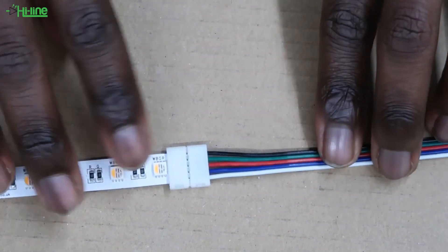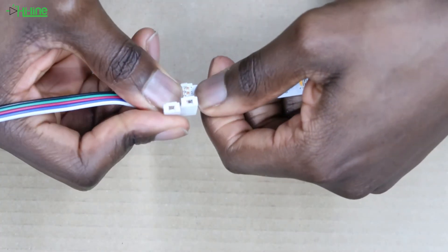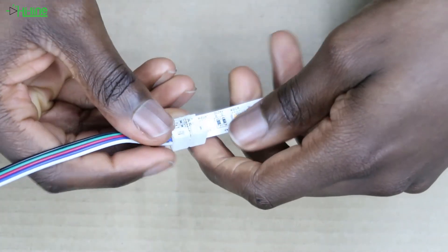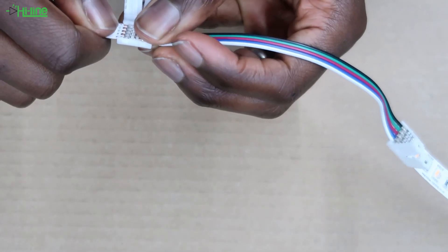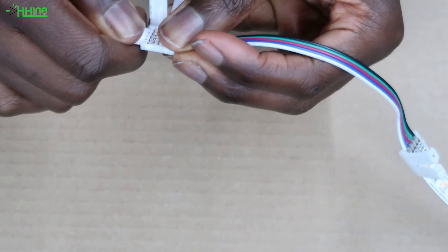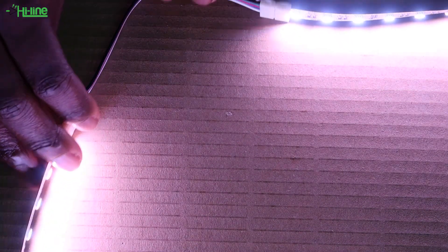Lastly, what we have available is our strip to strip 12mm solderless connector. This connector has the same concept as the previous one. You just need to slide the LED strip on each side of the connector. The connector itself can be useful if there's some distance between the two LED strips, or perhaps depending on your installation, this can also help you to go around some angles.